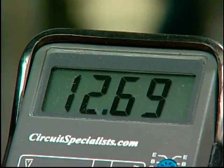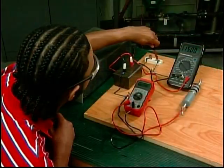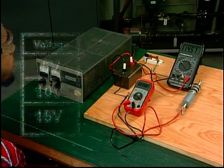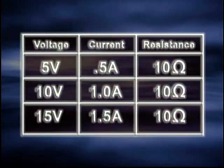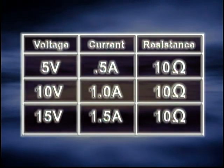Open the circuit switch and increase the power supply to 15 volts. Close the switch and read the values of current and voltage on the meters. The current is 1.5 amperes and the voltage is 15 volts. Analyzing the readings taken and taking into account the tolerance of the meters, the measured values prove that when the voltage goes up, the current goes up. When the voltage goes down, the current also goes down.